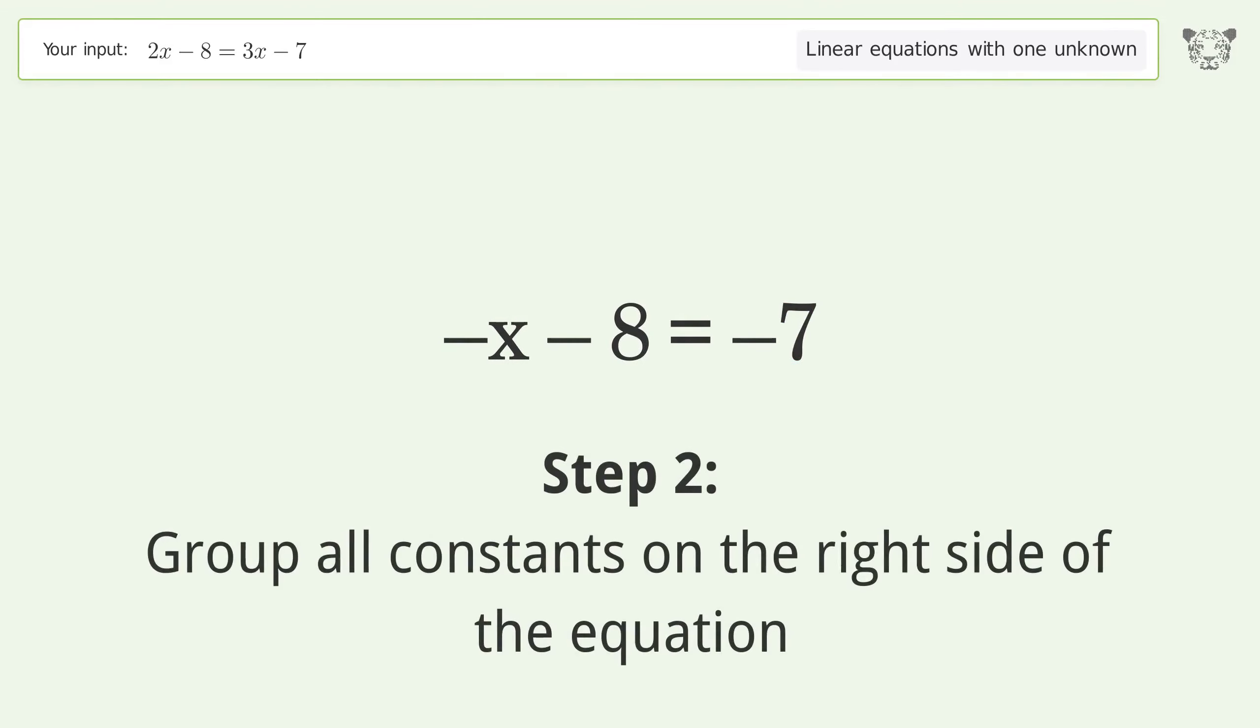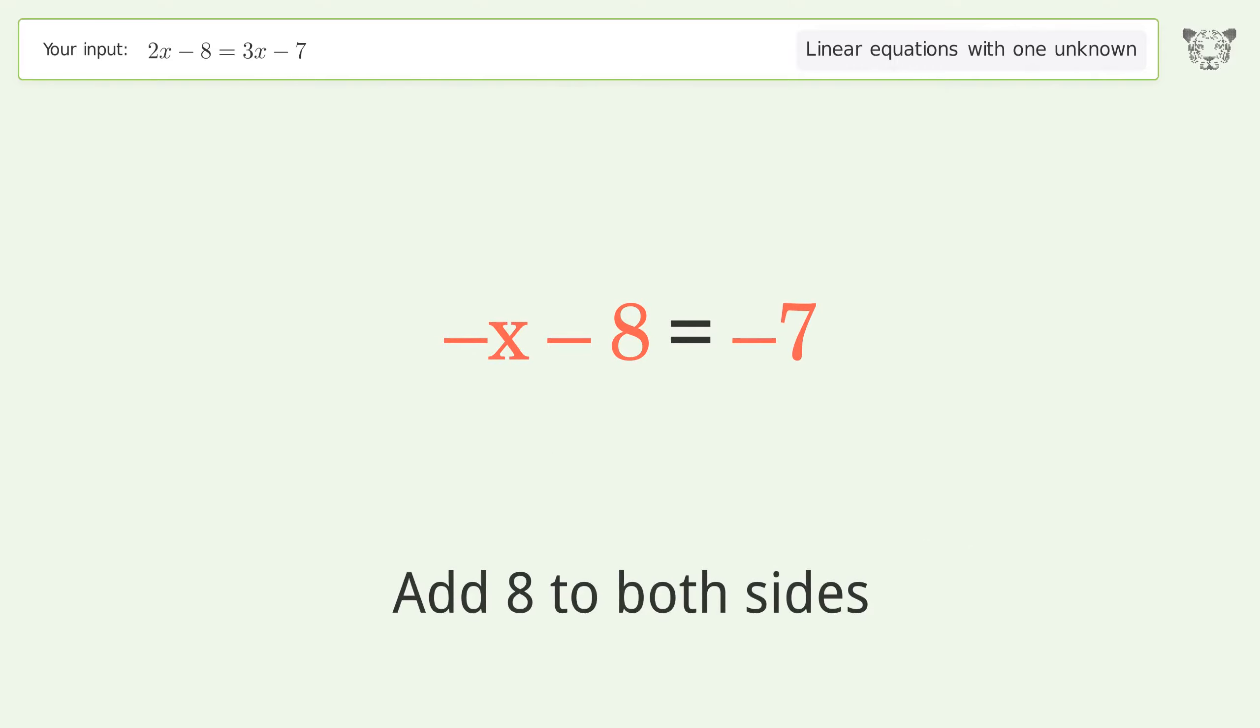Group all constants on the right side of the equation. Add 8 to both sides. Simplify the arithmetic.